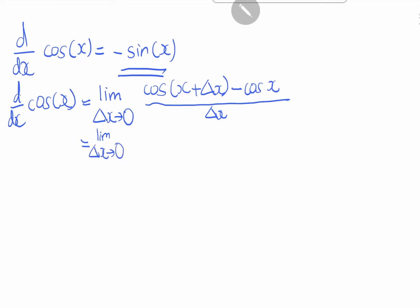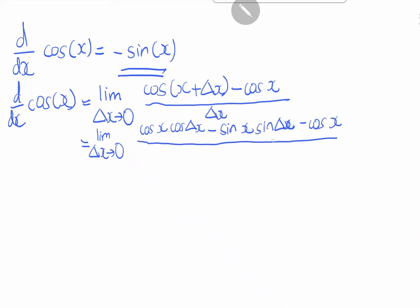So this equals the limit as delta x goes to 0 of cosine x cosine(delta x) minus sine x sine(delta x), minus cosine x, all over delta x. We can then bring the cosine x terms to one side.